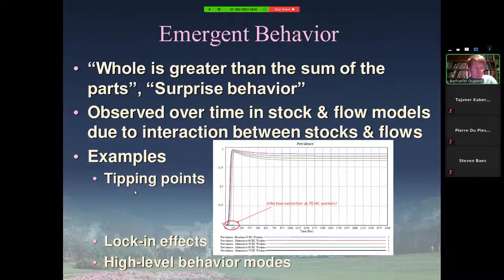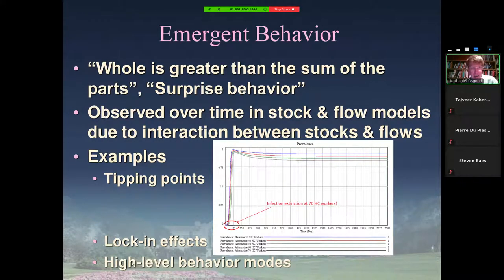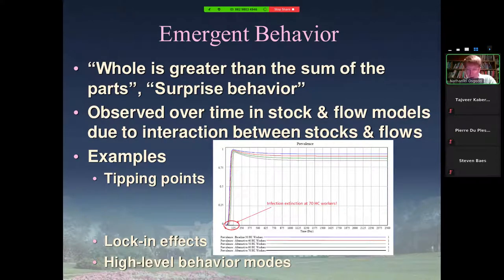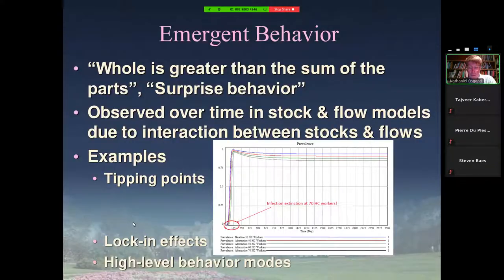This leads to really interesting behavior: tipping points — vaccinate one more person and COVID-19 may not be able to effectively spread in the population. Maybe this summer or early fall, if our vaccination-induced immunity isn't waning too quickly. There are lock-in effects: if we don't intervene early, the system can be so out of whack that picking up the pieces is much more expensive than if we had dealt with it up front. Think about early interventions in childhood to prevent traumatic events, or investing in childhood education and safe environments for kids. All these things can emerge from system dynamics models.